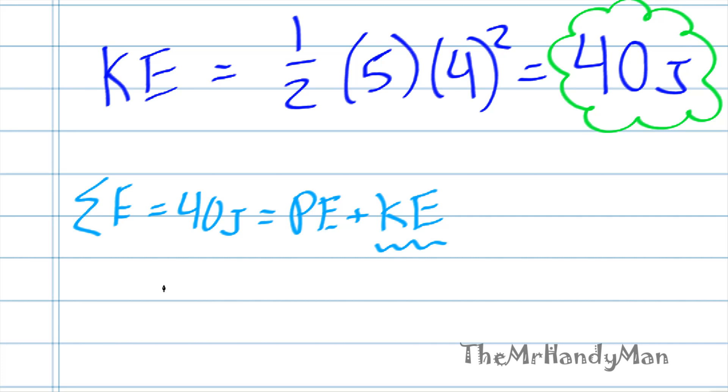So let's just calculate that out. You have 40 joules equals KE, which is going to equal one-half M, five, V squared, two squared, plus the PE, which is going to be M, G, H, five, nine point eight one, and then H or Z in our problem.